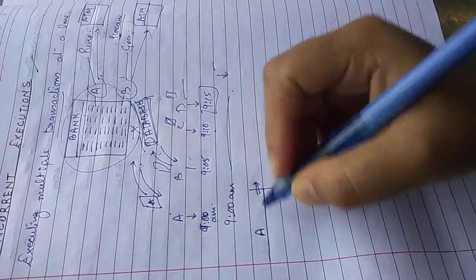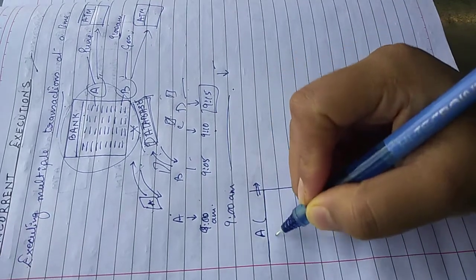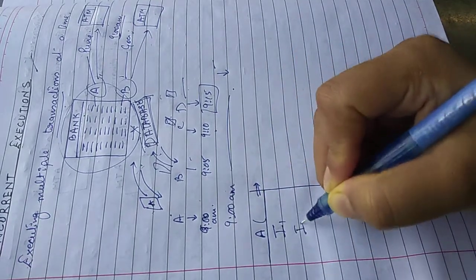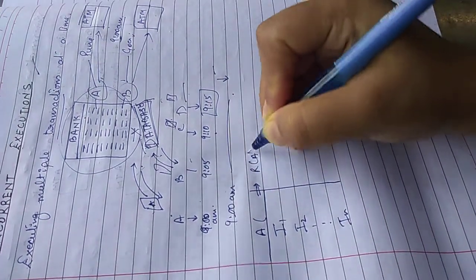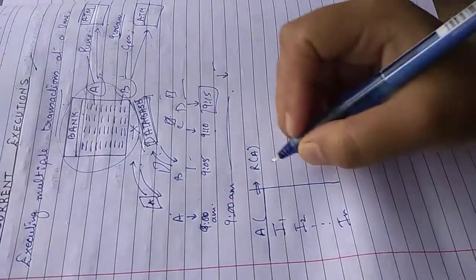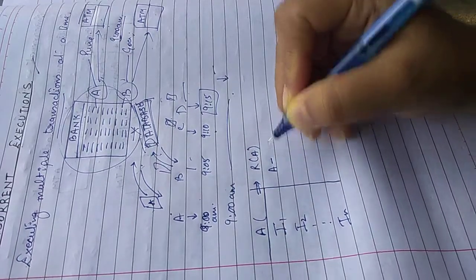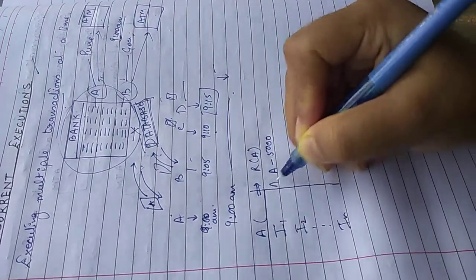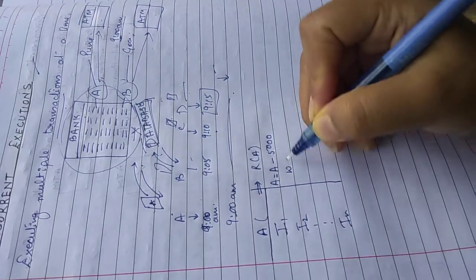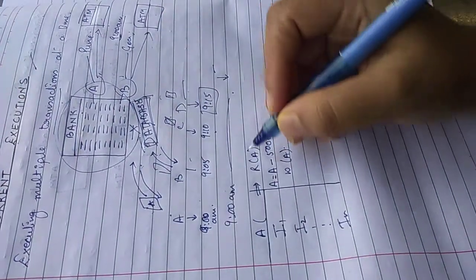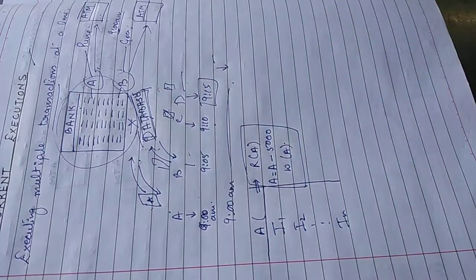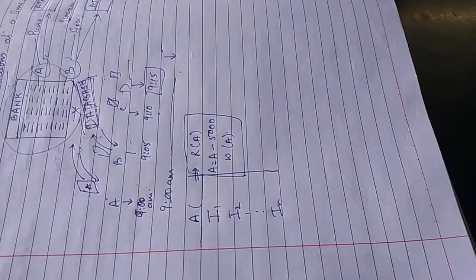A wants to withdraw money. I told you that a transaction has many instructions. So what will happen? First it will read the amount, how much it is, and then subtract how much is needed. A equals A minus 50, and then write back the remaining amount into the database. These are three steps in one transaction.